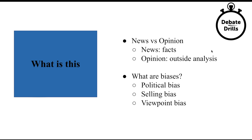What are news biases? First, let's establish the difference between news and opinion. News includes everything that's fact-based. So let's take the example of the fact that Jaya ate ice cream. Opinion is everything that's outside analysis. An example of this would be my brother telling my parents, 'Jaya ate ice cream because she was hungry.' If I did not explicitly say I ate ice cream because I was hungry, then that's my brother's analysis or opinion of my action.